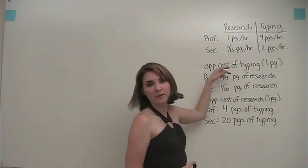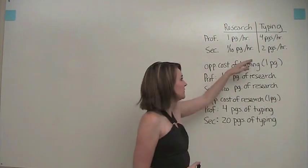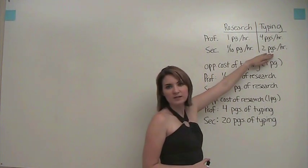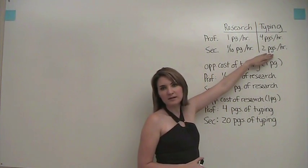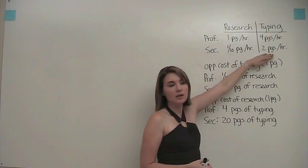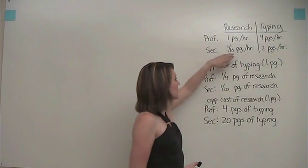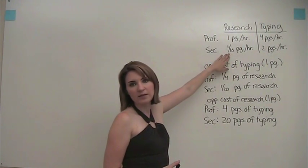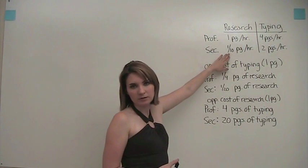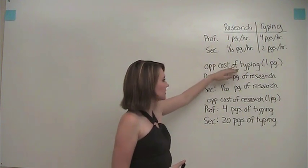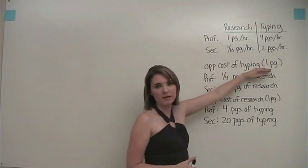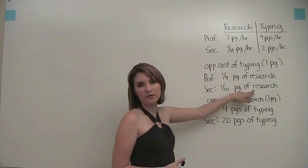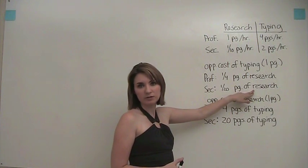For the secretary, one page of typing takes her 30 minutes. In 30 minutes, she can only produce one-twentieth of a page of research. So her opportunity cost of one page of typing is just one-twentieth of a page of research.